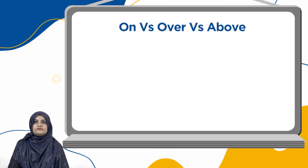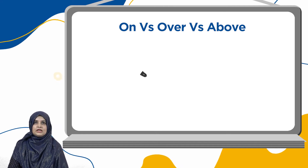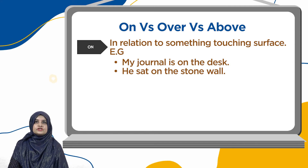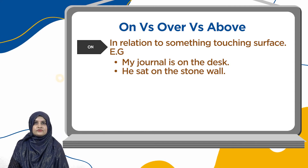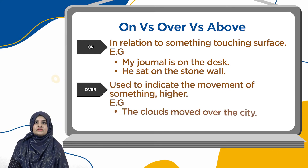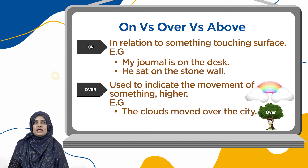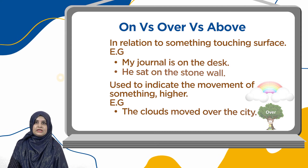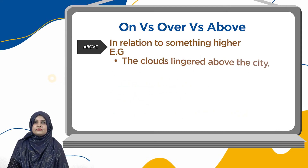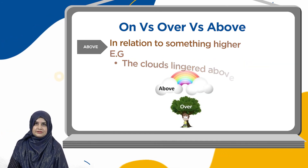Next, we have on versus over versus above. "On" is in relation to something touching a surface — for example, my journal is on the desk; he sat on the stone wall. "Over" is used to indicate the movement of something higher — for example, the clouds moved over the city. "Above" is in relation to something higher — for example, the clouds lingered above the city.